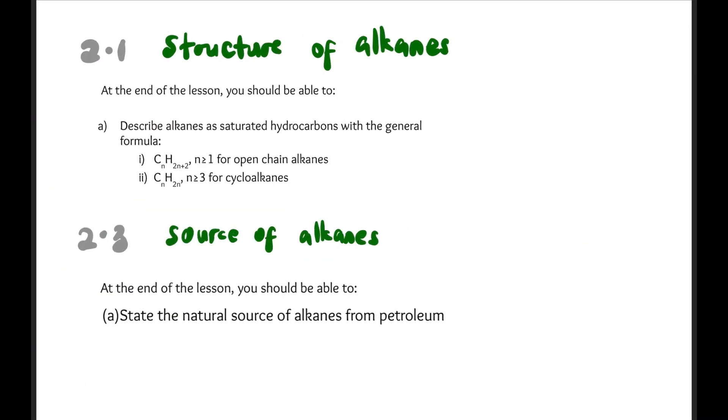At the end of this lesson, you should be able to describe alkanes as saturated hydrocarbons with general formula CnH2n+2 for open chain alkanes and CnH2n for cycloalkanes. And then also you must be able to state the natural source of alkanes from petroleum and natural gases.